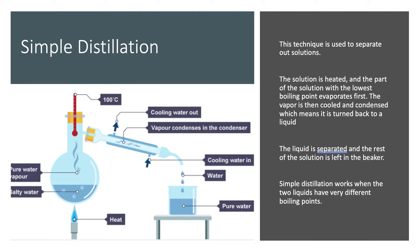Simple distillation works when two liquids have very different boiling points. In this diagram we have a Bunsen burner as the heat supply, which heats the solution. We've taken an example of salt water. We've got a thermometer to measure the temperature — in this case it's 100 degrees — so the salt stays left in the beaker and the water evaporates, with the gas going up and into the condenser.